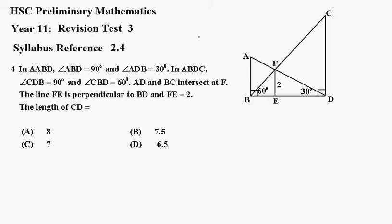The length of CD is A, B, C or D. Now what I'm going to try to do, I'll get the length of BE and the length of ED and that will give us the length of BD.